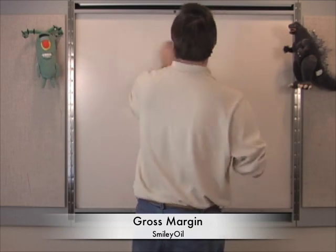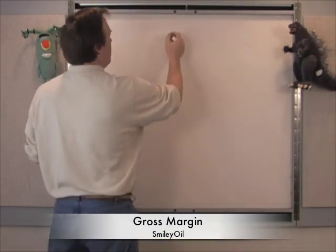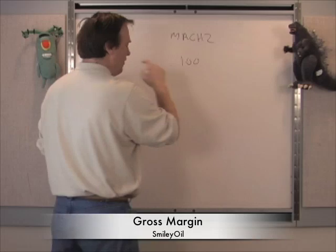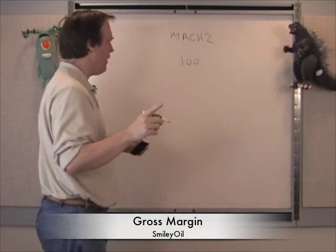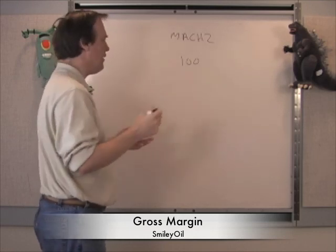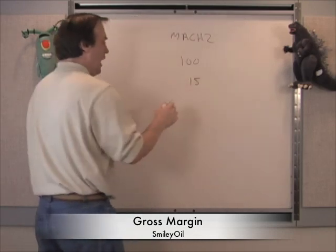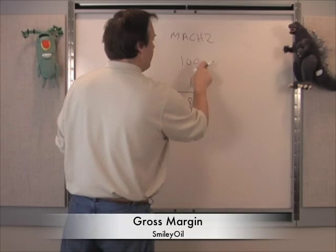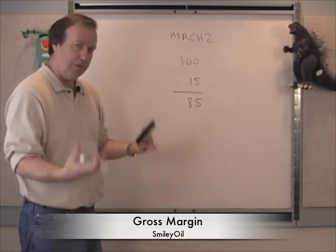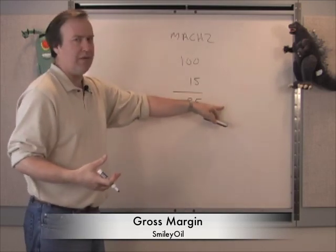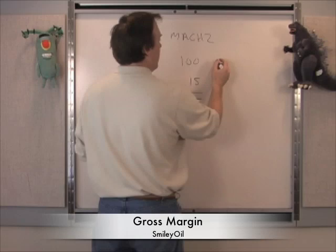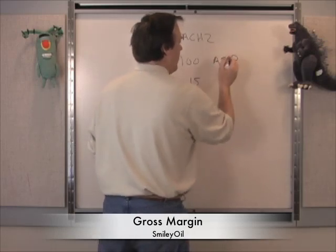Let's take the company that four of us started right out of college. We made a product called Mach 2 — a software product — and we sold it for $100. Since it was software, all we had to do was make a manual and a disc, which cost about $15. So for every unit sold, after paying for the manual and disc, we made $85. As a beginning businessman I would have called that profit, but you don't.